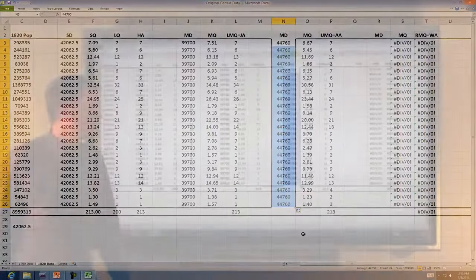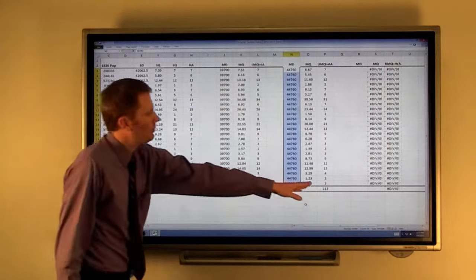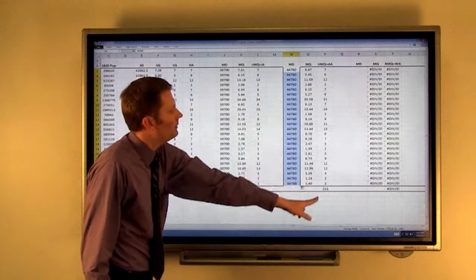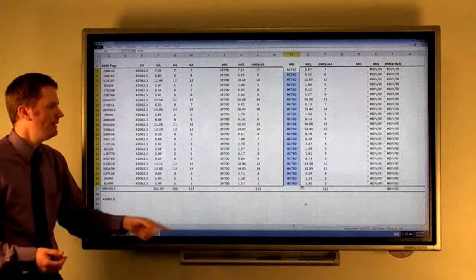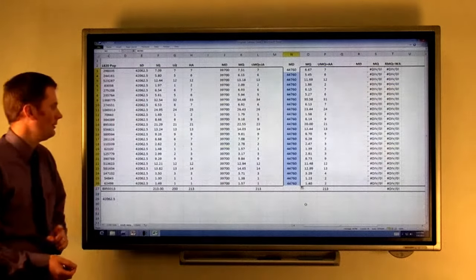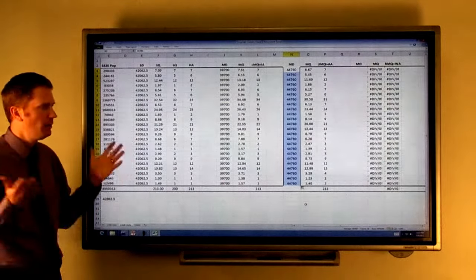We're going to try 44,760 and see what happens here. Perfect, 213. So these are the representatives that Adam's method would propose that each of the states have. Again, it's different than Jefferson's. And it's different from Hamilton's. They all have their differences.